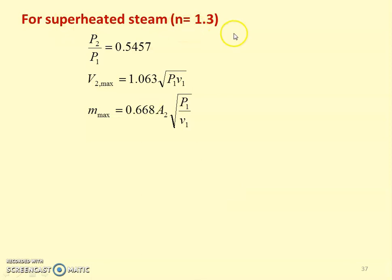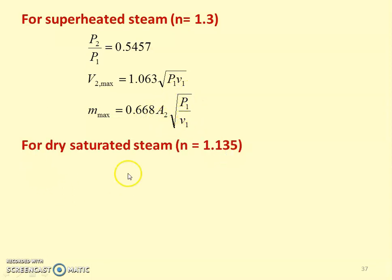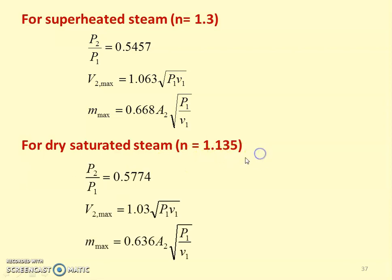When the steam is superheated, n equals 1.3: the critical pressure ratio P2/P1 equals 0.5457, the maximum exit velocity V2_max equals 1.063 times the square root of P1v1, and the maximum mass flow rate equals 0.668 times A2 times the square root of P1/v1. When the steam is dry saturated, n equals 1.135: P2/P1 equals 0.5774, V2_max equals 1.03 times the square root of P1v1, and maximum mass flow rate equals 0.636 times A2 times the square root of P1/v1.